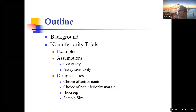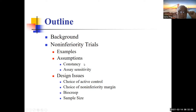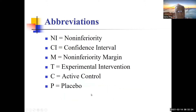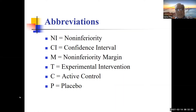Here's the way Scott presented the material. He started with background, then non-inferiority trials, examples, and assumptions. We will talk about constancy and sensitivity — these are the assumptions for doing non-inferiority clinical trials. We'll also cover design issues, choice of control, choice of margin, bio creep, and sample size. In Scott's notation, NI stands for non-inferiority and CI for confidence interval.